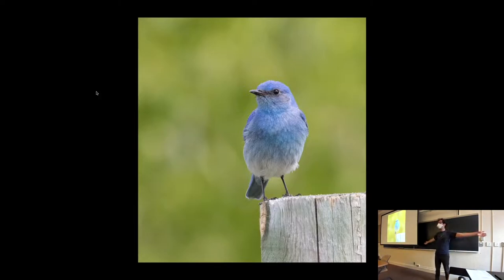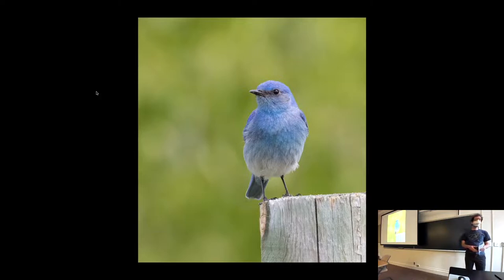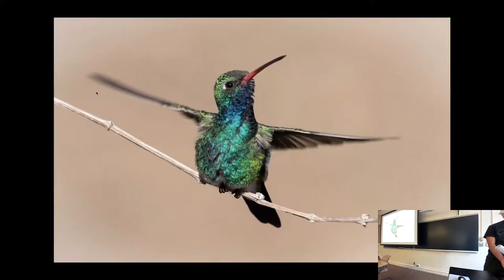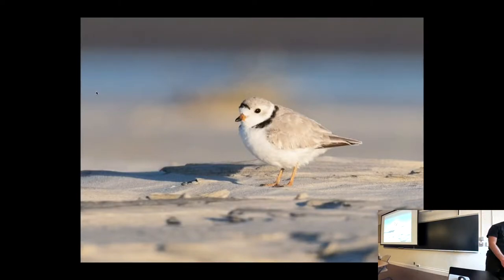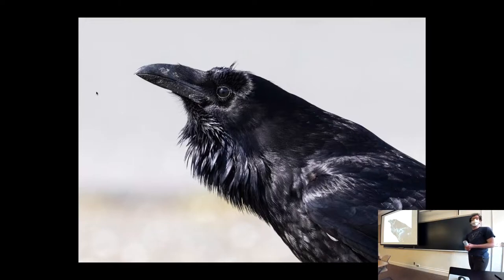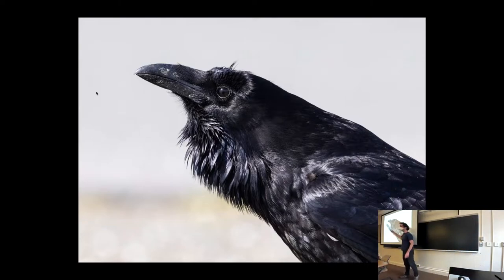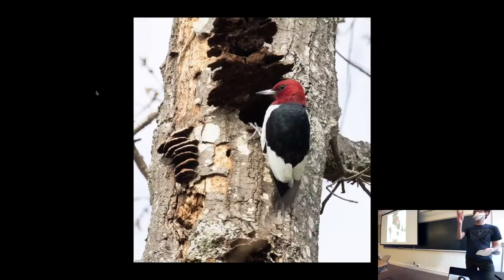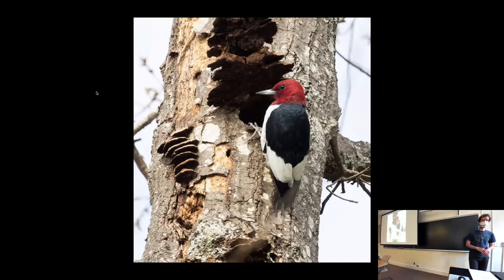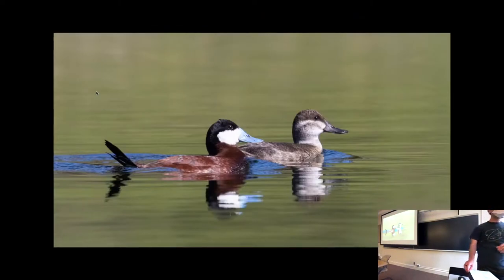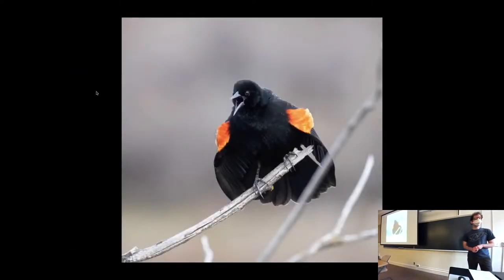Welcome to Ultimate Monday! We have a collection of birds: a mountain bluebird, a broad-billed hummingbird, a piping plover, a little shorebird, a raven. One of the ways you can tell the difference between a raven and a crow is that ravens have these ruffles on their neck and crows do not. Ravens are bigger, but unless you see them side by side it might be a little hard to judge. We also have a red-headed woodpecker, some ruddy ducks, and a red-winged blackbird.